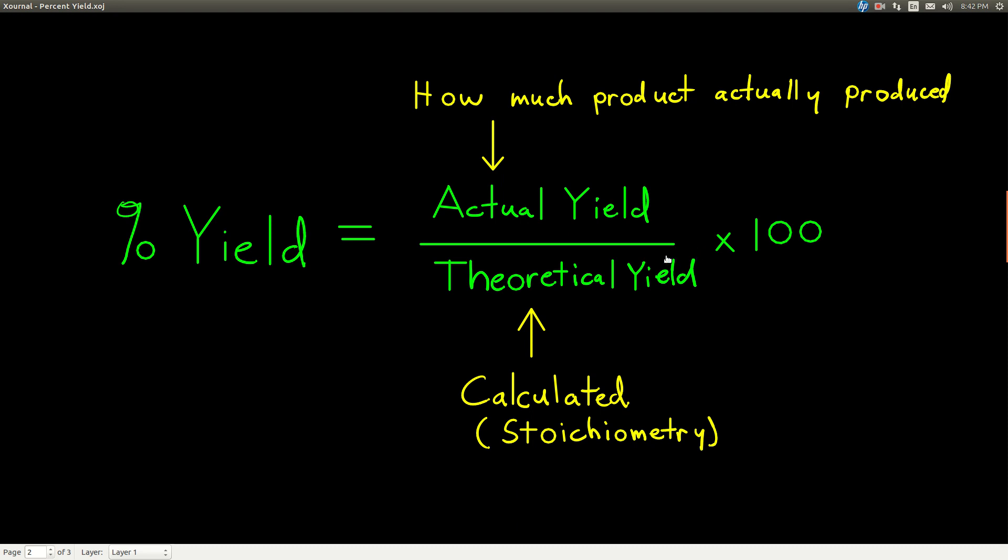When you do a chemical reaction in the lab, you get a product. And when you weigh that product, the amount that you get, usually it's weighing for a mass, how much you actually get, that's your actual yield.